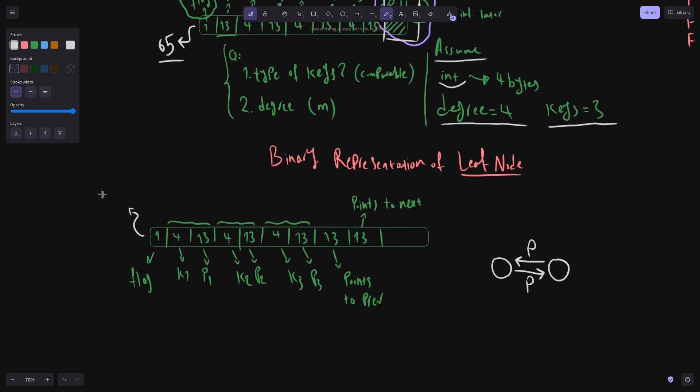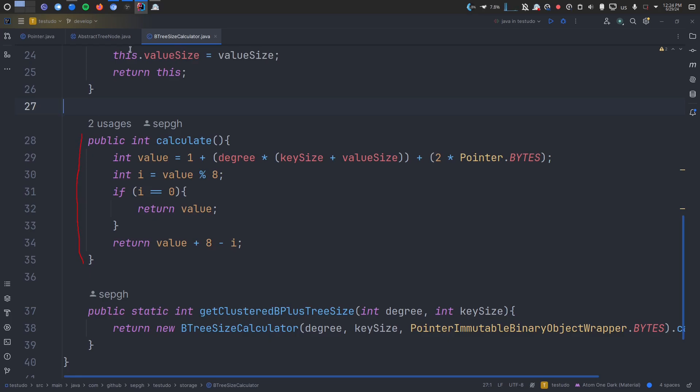Now the sum of these numbers is 78, which is already greater than 65. However, one more thing that I do, which is not really necessary, is that I still add a padding to make the length of this array divisible by eight. This is the function I wrote to do that. It's available under B3 size calculator class. First, we have one byte for the flag. Then we have degree times pairs of keys and values. And then we have two pointers to point to next and previous nodes. Afterwards, if this value is already divisible by eight, I return it. Otherwise, I return the value plus eight minus the remainder of the division of this value by eight.